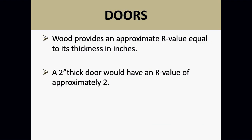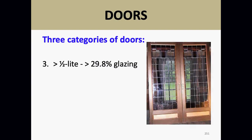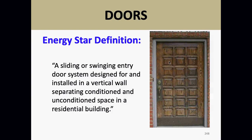Wood provides an approximate R-value equal to its thickness in inches — so a two-inch thick door has an R-value of approximately two. But be careful: before assuming a door is solid wood, look at it from the side and tap on it to determine if it's totally wood or if it has insulation sandwiched between two wood surfaces. A solid carved wood door like a classic hobbit-style door is probably solid wood, but a more manufactured-looking door may have insulation inside.